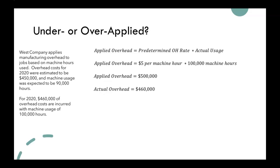We want to compare that to our actual overhead. It tells us that in 2020, $460,000 of overhead costs were incurred — that's our actual overhead. Just to reiterate: the $450,000 is our estimated overhead, the $500,000 is our applied overhead, and the $460,000 is our actual overhead. We are comparing our applied overhead to our actual overhead, and we can notice that our overhead was $40,000 over applied.